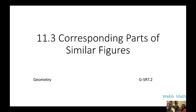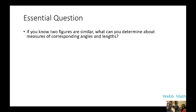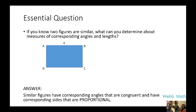11.3 corresponding parts of similar figures geometry. The essential question: if you know two figures are similar, what can you determine about the measures of corresponding angles and lengths? The answer: similar figures have corresponding angles that are congruent and have corresponding sides that are proportional.